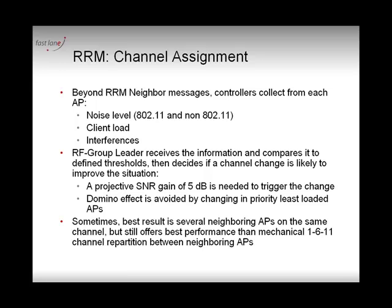With this information, the RF group leader is going to decide if there is an issue and if changing the channel of one or several access points might solve it — we say 'might' because it's not always the case. The controller performs a predictive calculation: if changing the channel would increase the average client SNR by at least 5 dB, taking into account other access points on the new candidate channel and the noise on that channel. If it does, every 600 seconds the instruction will be sent from the RF group leader to the relevant controller: change access point number whatever from channel whatever to whatever channel.